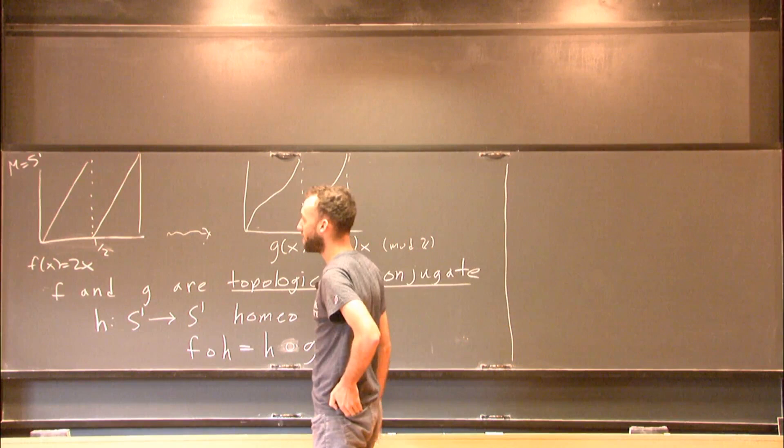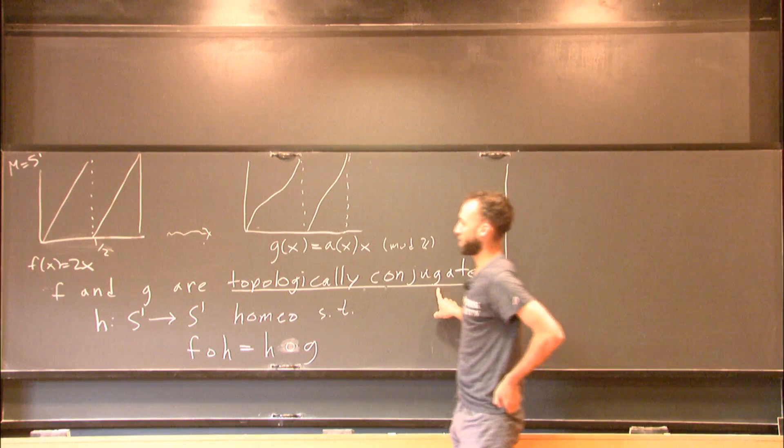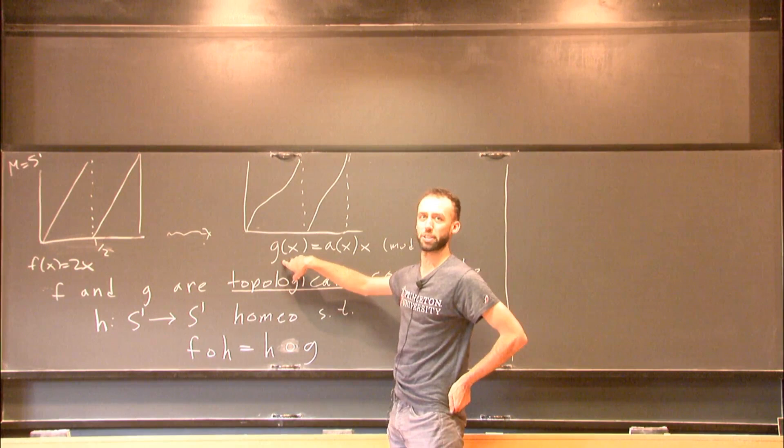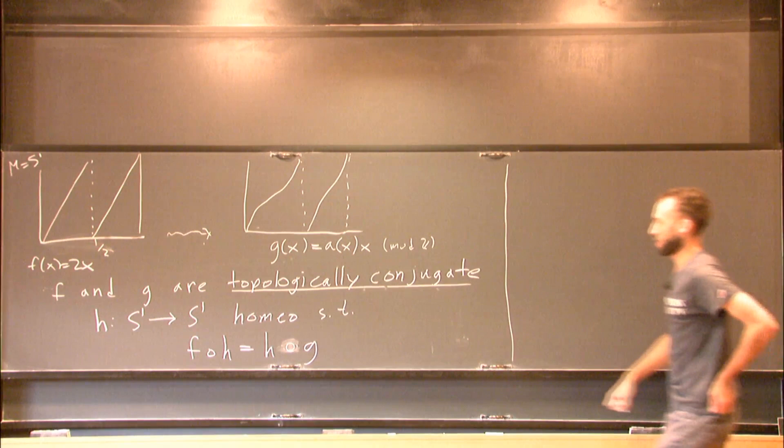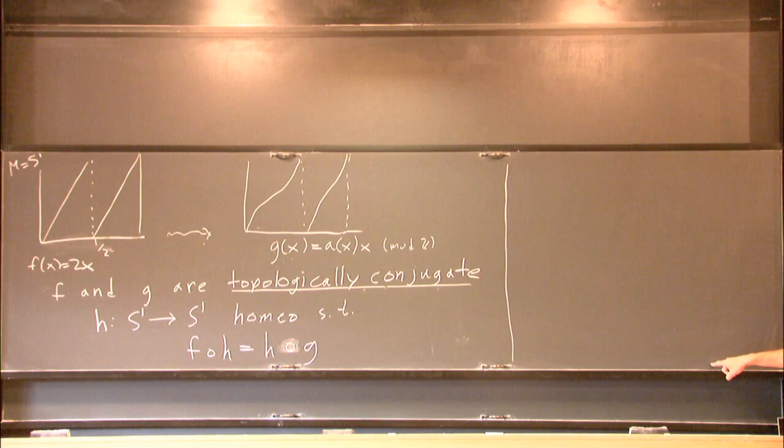The fact that the thing smooth, you begin with, you don't want to ask for smooth conjugacy. Right. So this is going to be, in general, only a homeomorphism. Because if you change, say, the eigenvalue of this at a fixed point, then it can't be a smooth conjugacy anymore. So in general, this is only going to be continuous and not smooth.